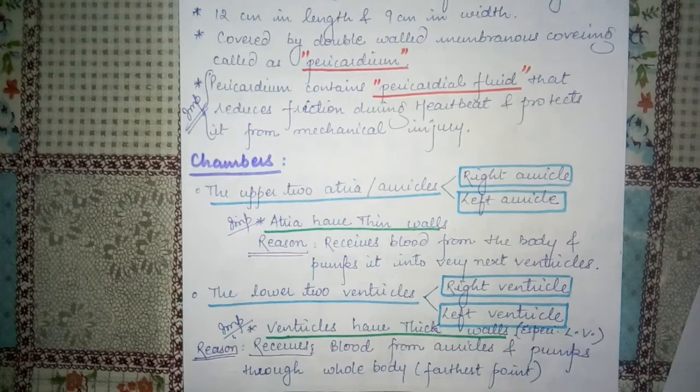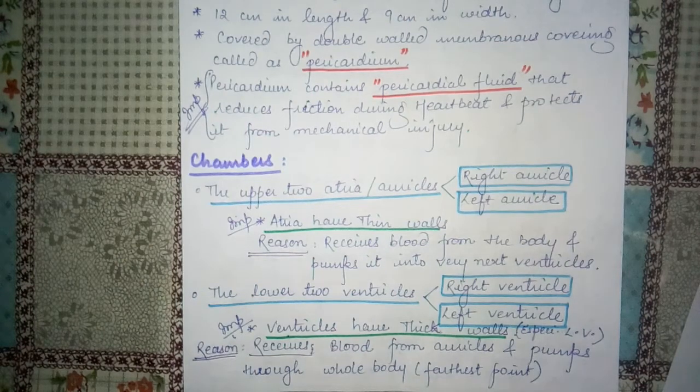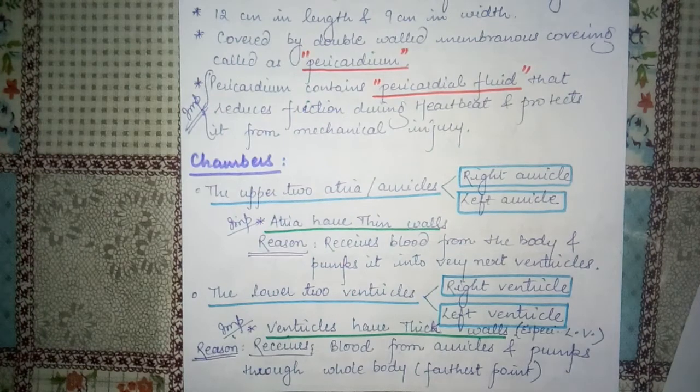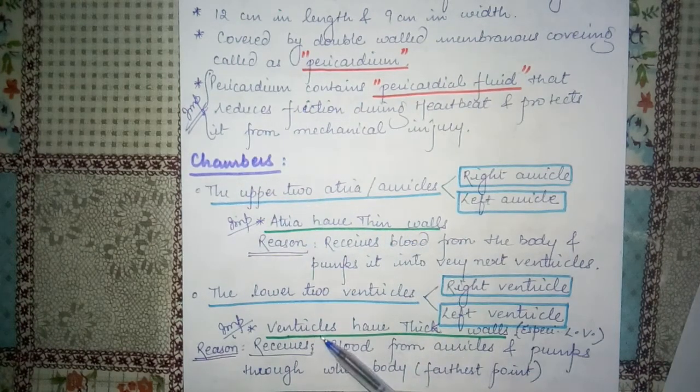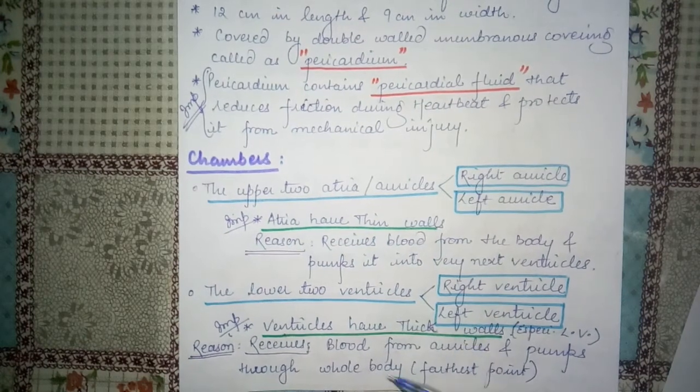There is one such question that is usually asked in board examinations: give reason why the walls of Atria are thin-walled and why the walls of Ventricles are thick-walled.